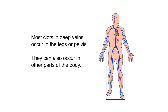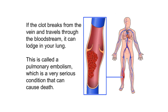Most clots in deep veins occur in the legs or pelvis; they can also occur in other parts of the body. If the clot breaks from the vein and travels through the bloodstream, it can lodge in your lung. This is called a pulmonary embolism, which is a very serious condition that can cause death.